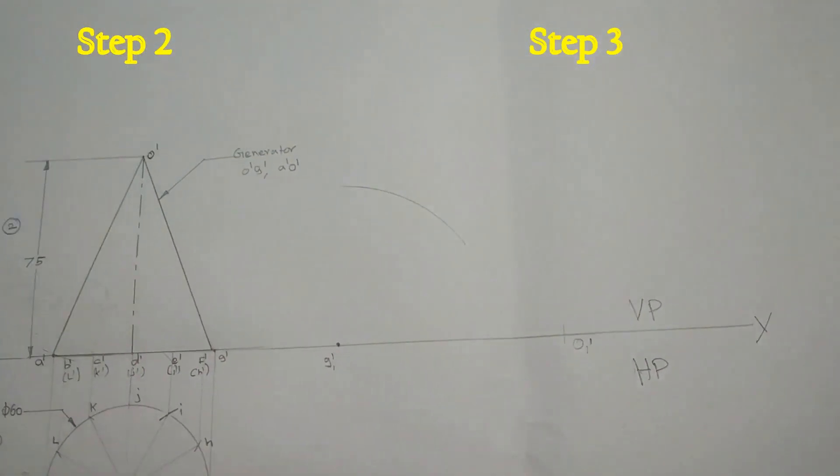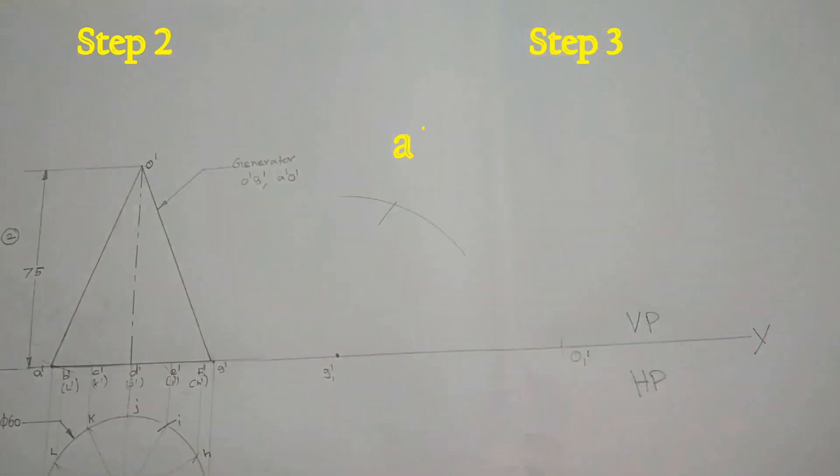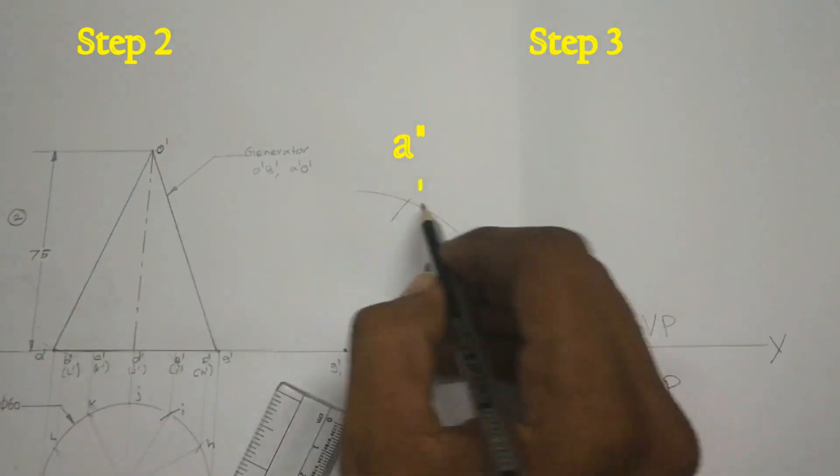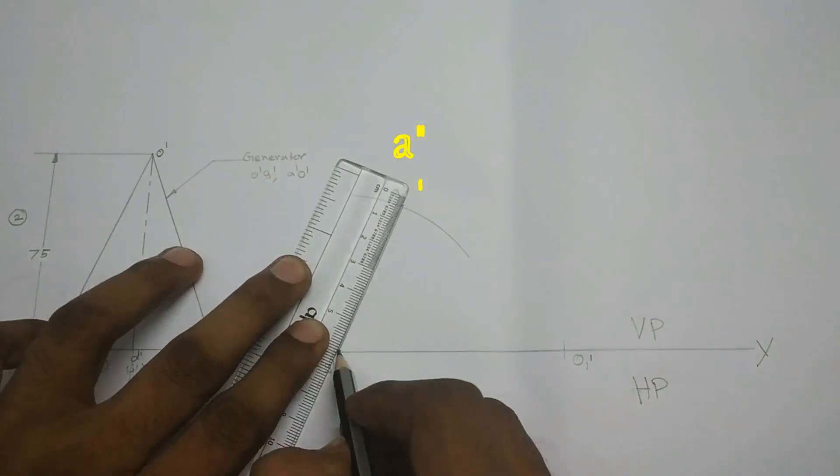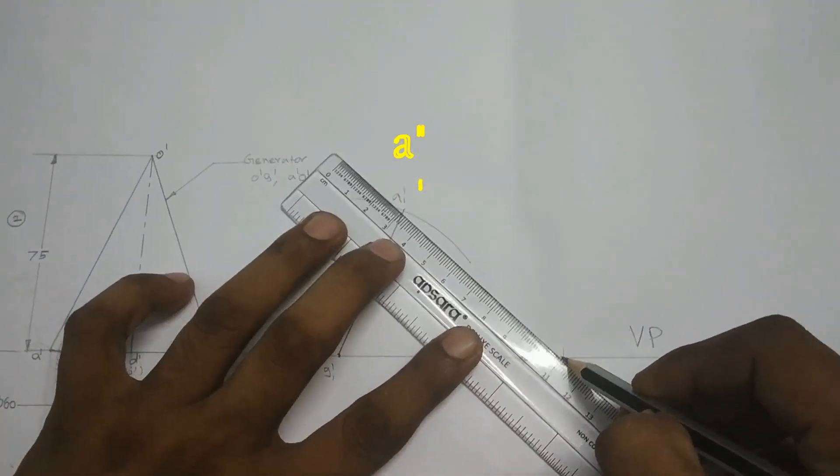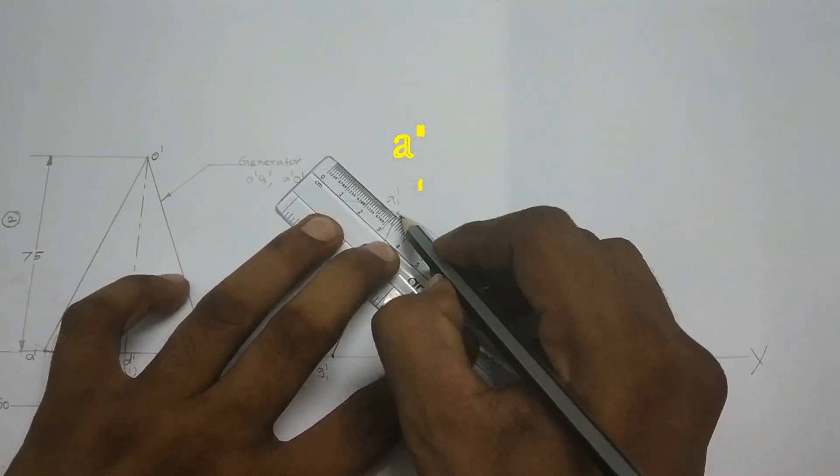Measure the distance O dash, A dash in step 2. And make an arc in step 3. The two arc intersecting point is our A1 dash.